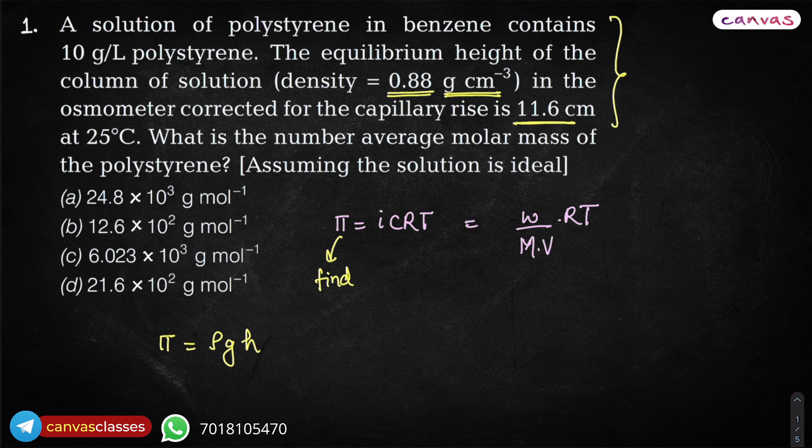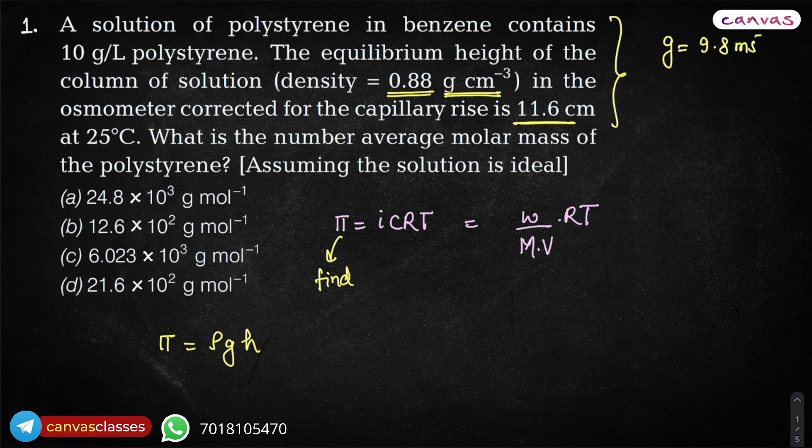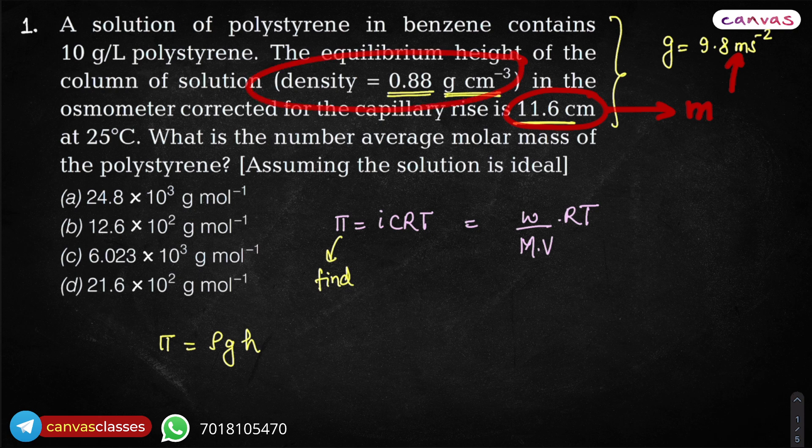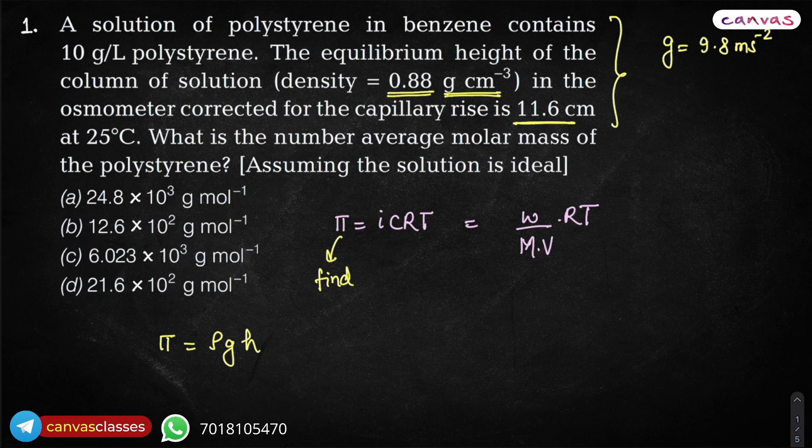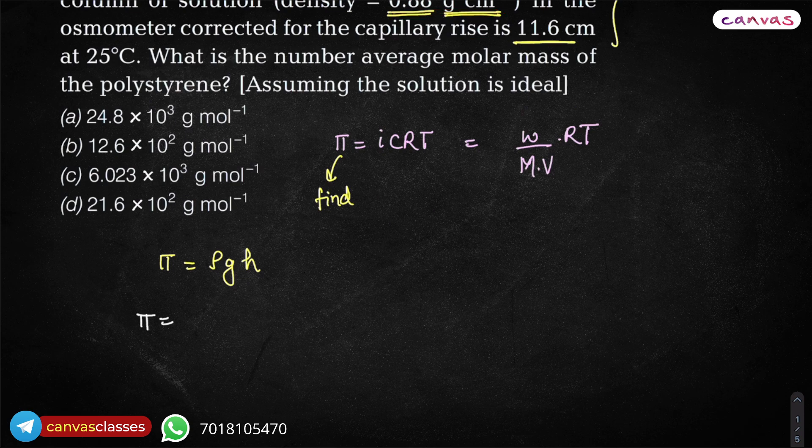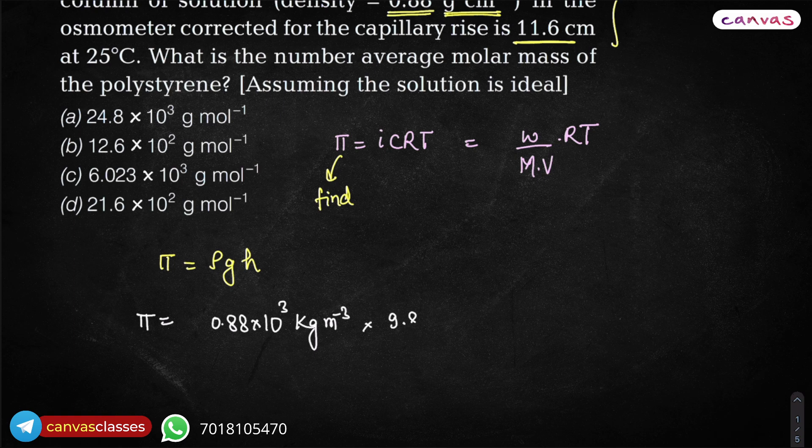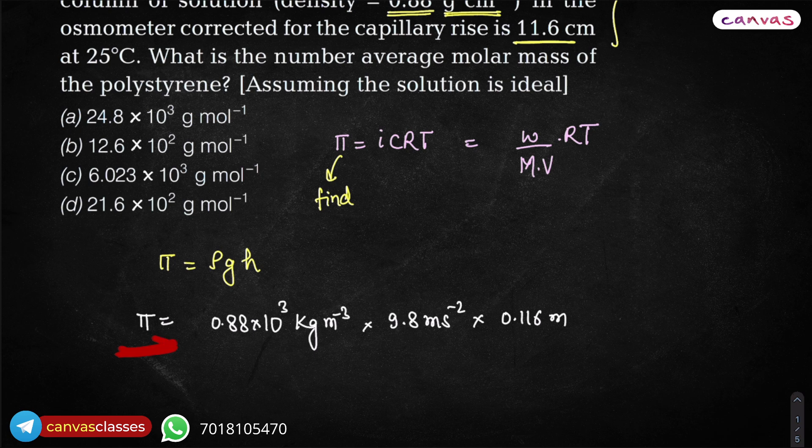And what is g? This is 9.8 meter per second square. So if you are using meter here, then you have to convert this also in meters and also the density into proper SI unit like kilogram per meter cube. Rather than gram per centimeter cube, we have to convert it into kilogram per meter cube. How do we do that? By multiplying it with 1000. So π is equal to density 0.88 into 10³, now you can write kilogram per meter cube. ρ into g, 9.8 meter per second square. Height is 0.116 meter. So you will calculate π from this data.